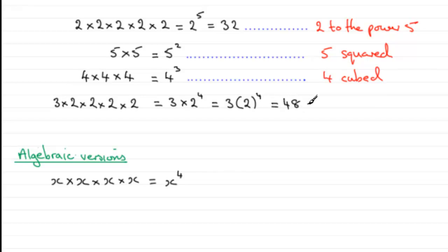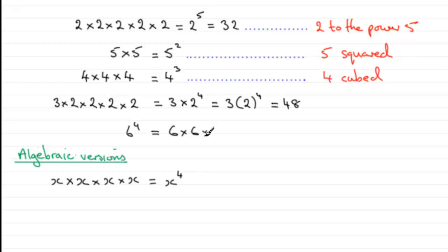What you don't want to do is make the mistake of thinking that this is three times two, which is six to the power four — it's not six to the power four. Six to the power four would be six times six times six times six, and this gives a totally different answer.